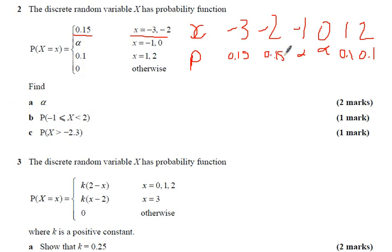First thing is find the value of alpha. We know that all of this adds up to 1. So you can just add up the 0.15s and the 0.1s, take it away from 1, and obviously there's two alphas. So we just divide down to get one of the alphas.